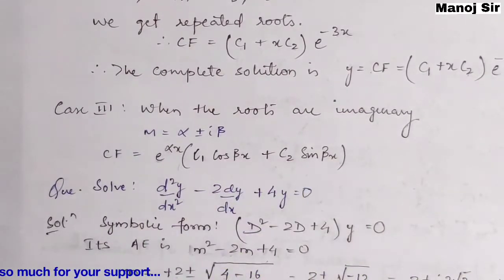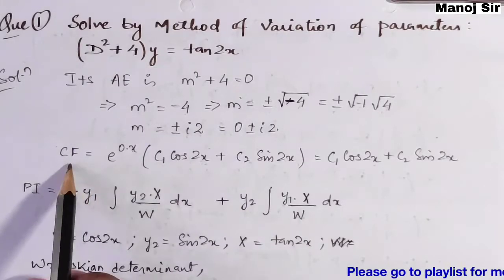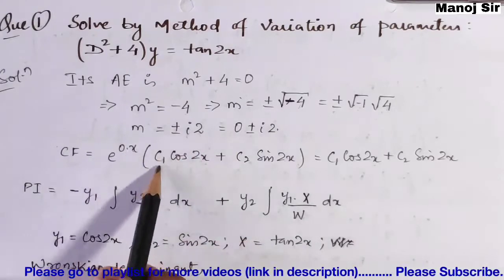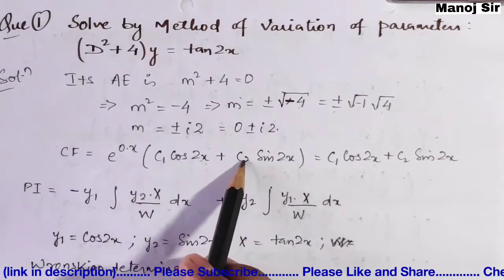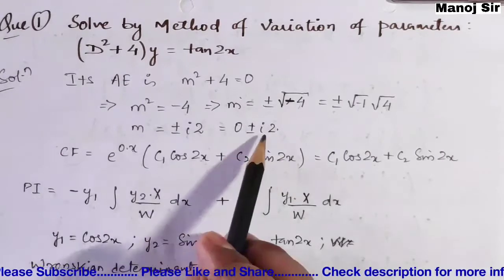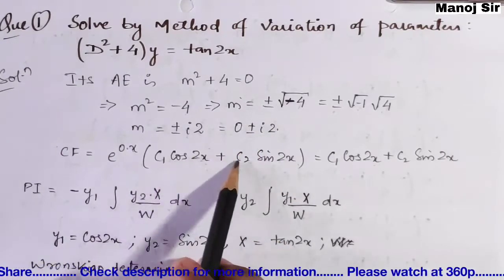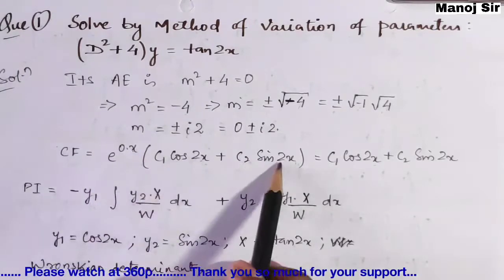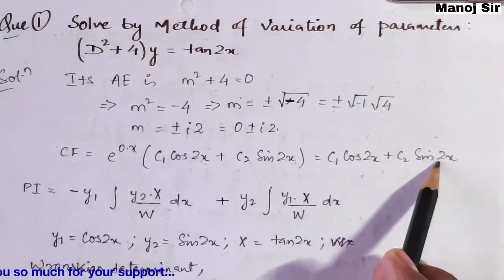Applying the formula with α = 0 and β = 2: e^(0·x) = 1, so CF = c1·cos2x + c2·sin2x. This is the complementary function for this equation.